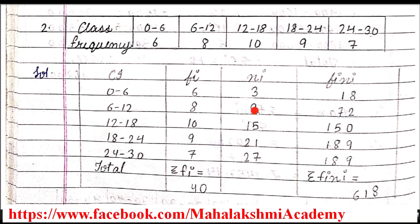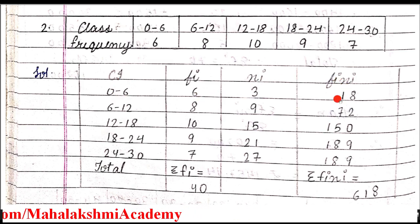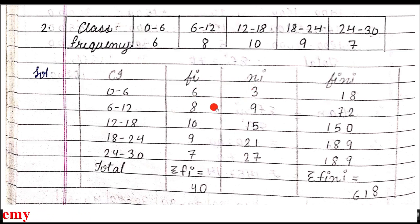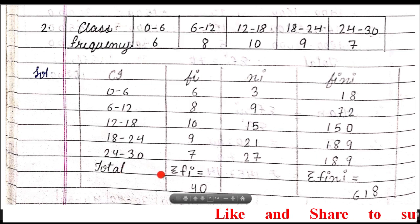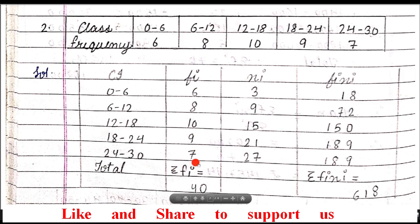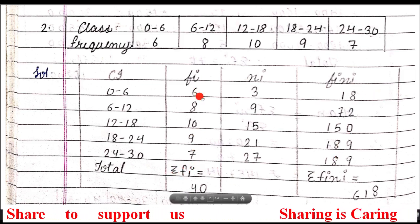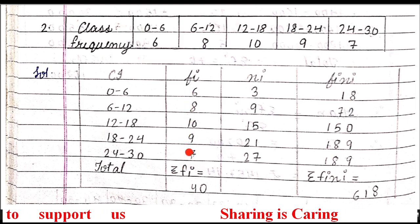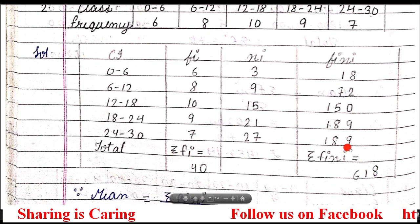We have to create the class mark column with the help of CI. Now to fill the fi·xi column, we have to do the product of fi and xi. So 6 into 3 is 18, then 8 into 9 is 72. Multiply and enter like this. The last row is of total — we need the total of fi column and fi·xi column. Sigma fi, when you add all the frequencies, gives 40. And when you add all fi·xi data, you get 680.